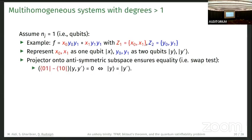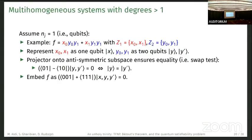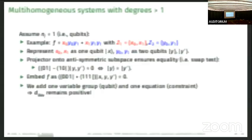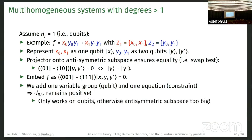What we have is the antisymmetric subspace on two qubits is actually just rank one, so we can just do it with a single constraint. Then we can embed f like this. You have c_001 here that goes to here, and c_111 goes to 111 here. This process just adds one variable group, a qubit, and one equation or constraint, so the Bézout number remains positive, but it increases.